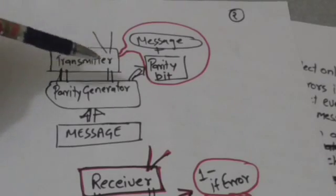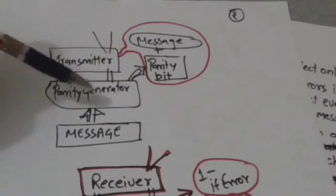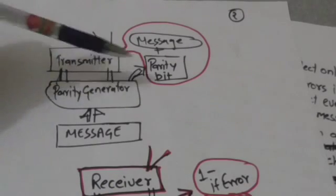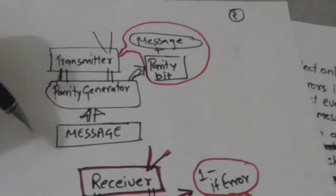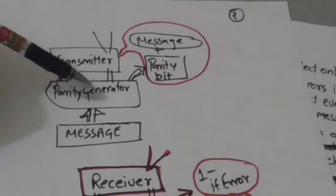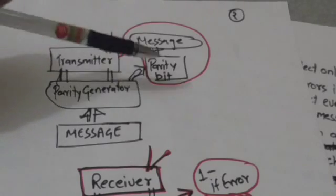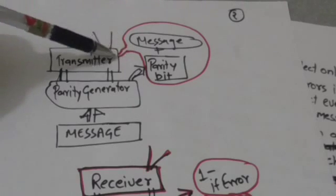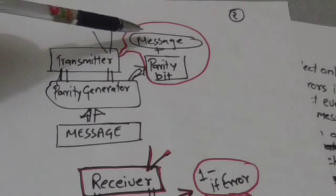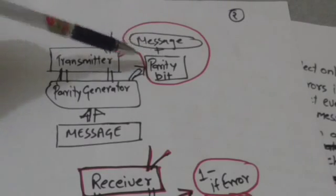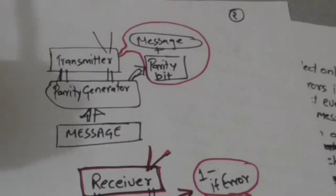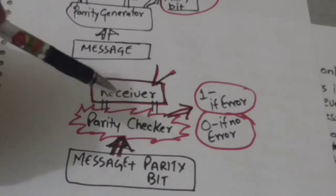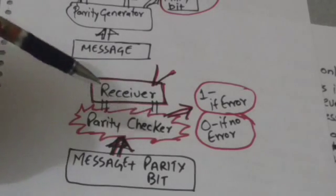There is a combinational circuit called a parity generator at the transmitter. This parity generator generates the parity bit for the messages — it takes the original message as input and generates the parity bit for that message. The transmitter then transmits the message along with its parity bit generated by the parity generator.